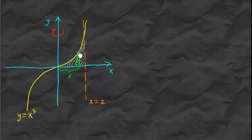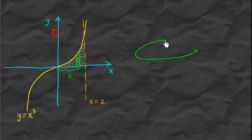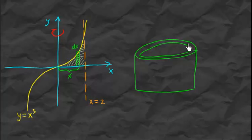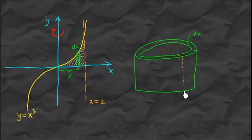We revolve a small vertical rectangle about the y-axis. The object we get is a cylindrical shell. This dx corresponds to the thickness of the cylindrical shell. Now, similar to what we did before, we try to understand how to compute the volume of this shell.